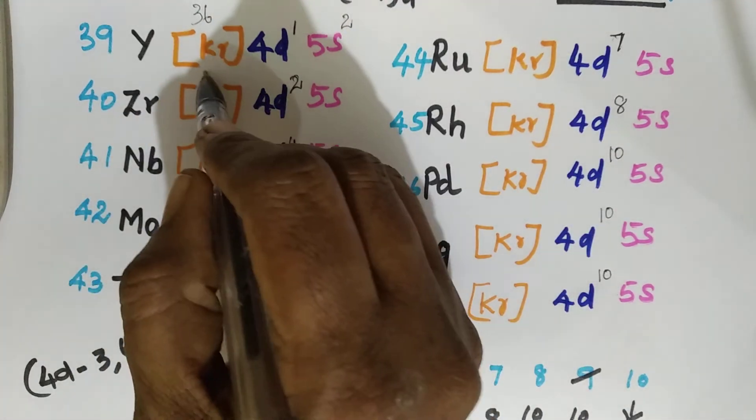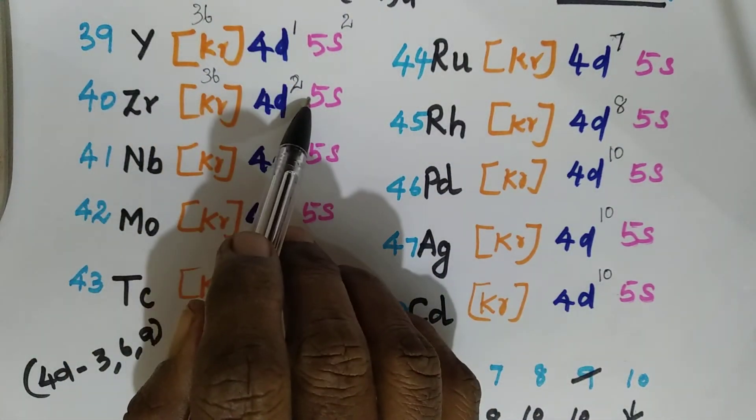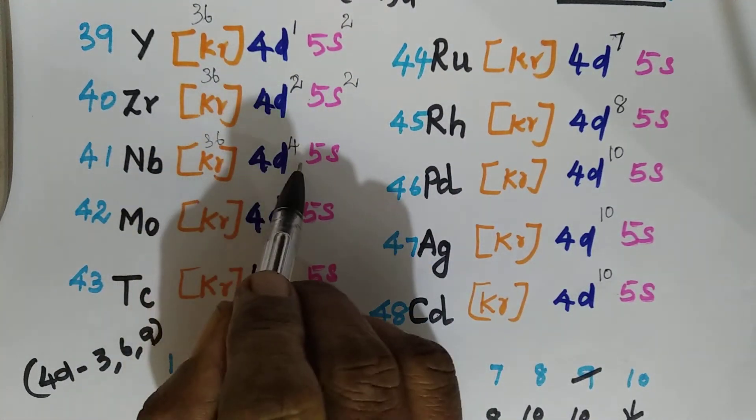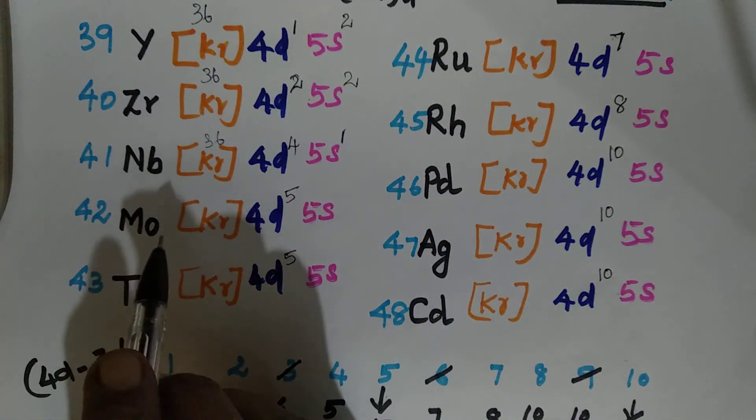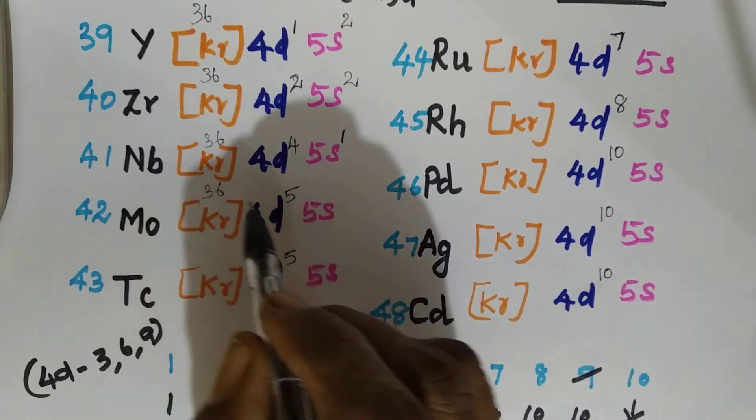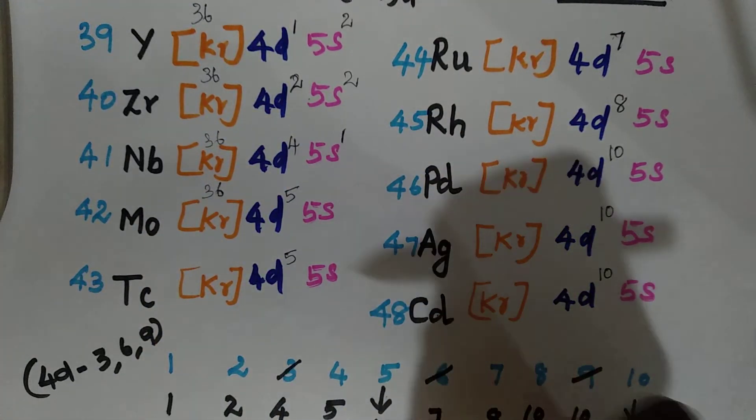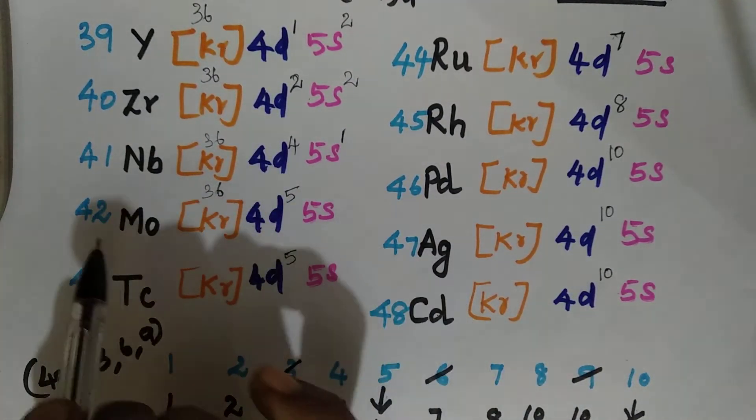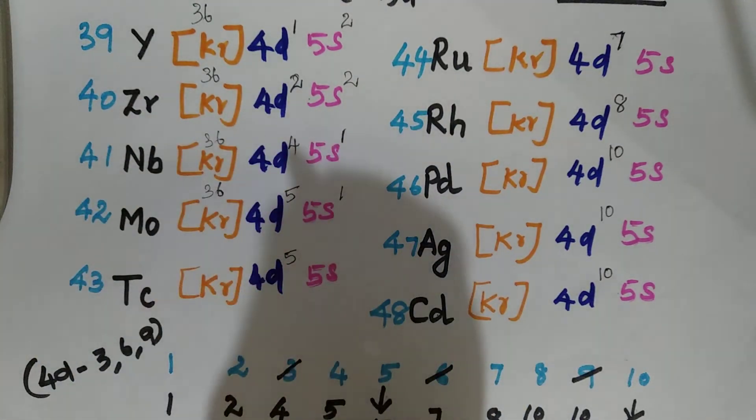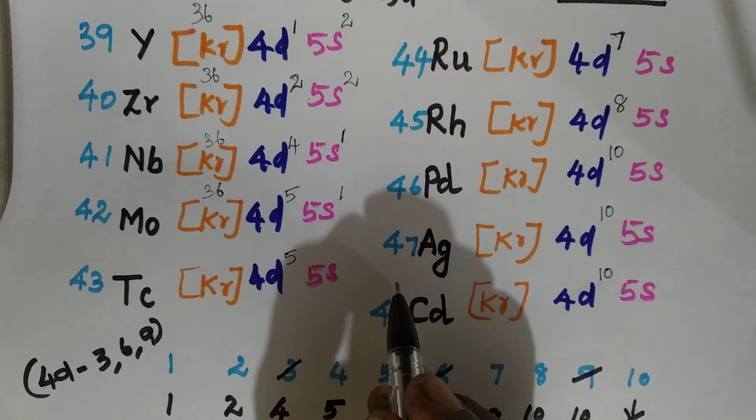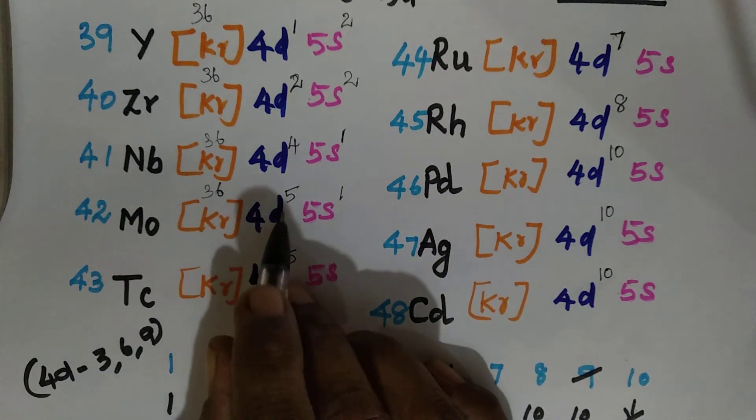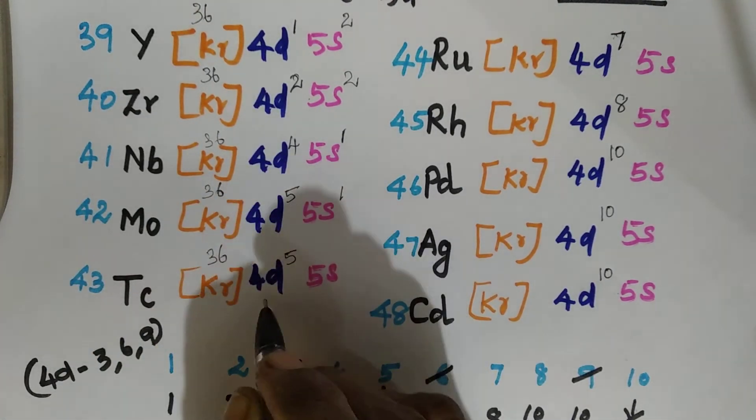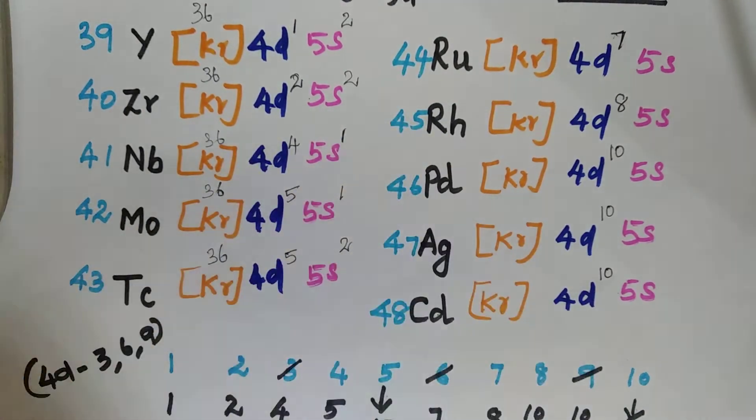Now, this is 36. I write again so that it will be easy for you. 36 plus 2 is 38. 40, it is 2 only. Then this is 36 plus 4, actually 40. 41 minus 40 is going to be 1. 42, krypton 36. You can also do it on your own, children. You just keep writing down while I am writing also, so that it would be easy. Then 36 plus 5 is 41. 42 minus 41. Again 41, it is 1 only. Molybdenum 41. For 45, 5S1. Then technetium, 43. Krypton 36. 36 plus 5 is 41. 43 minus 41 is 2.